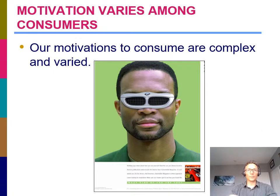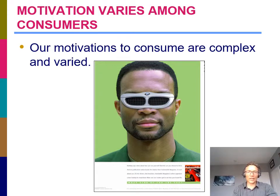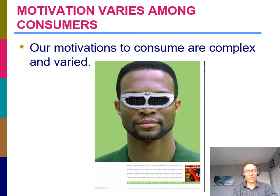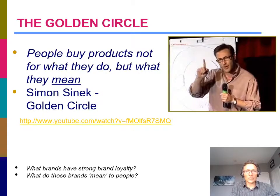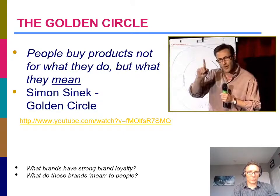People buy things for a variety of reasons. Consumers buy products to adorn their lives and support the role and identity they have for themselves, and marketing is influencing that entire process. Your first learning objective is the golden circle — a concept from business strategist Simon Sinek. His main point is that people don't buy products because of what they do; they buy because of what they mean.